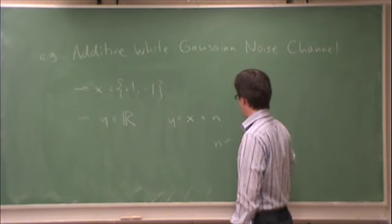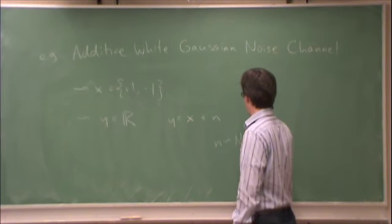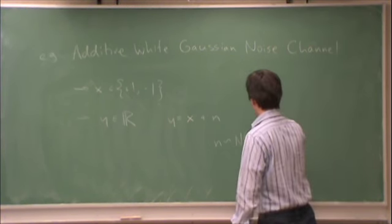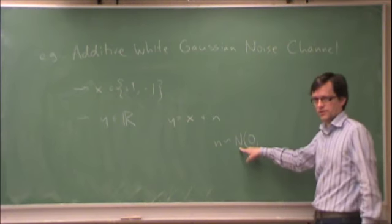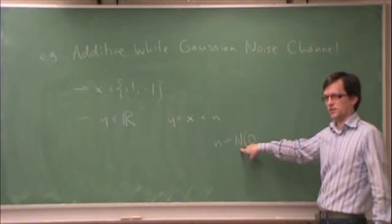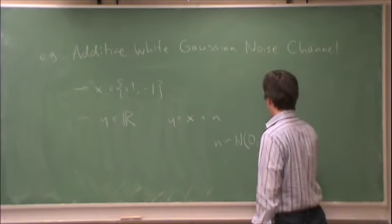And n is a Gaussian random variable distributed with zero mean. This notation means a Gaussian random variable distributed, Gaussian zero mean and variance sigma squared.